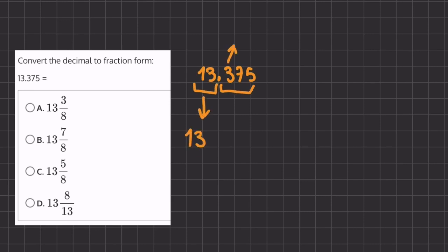And so let's take a look at this decimal. We know that the 3 is in the tenths place, the 7 is in the one hundredths place, and the 5 is in the one thousandths place.